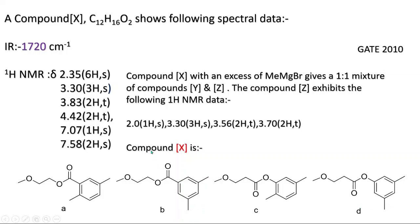Next we look at δ 3.30, 3H singlet. This is familiar — a heteroatom is present attached to that carbon, which is why it resonates at 3.30. This may be a CH3 attached to oxygen, which is present in this compound. Now moving to the next signals: two 2H triplets at different chemical shift values. The oxygen with a lone pair is in conjugation with the carbonyl group, creating a positive charge on oxygen, which withdraws electrons. So one CH2 appears at δ 4.42 and the other at δ 3.83.